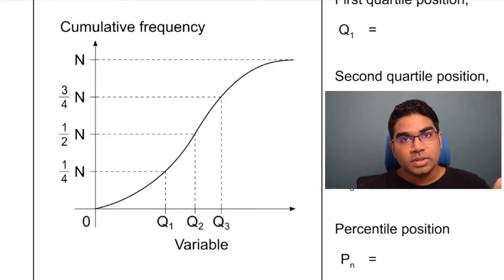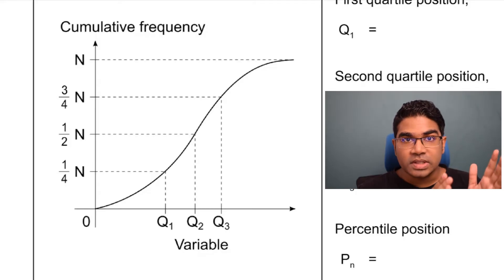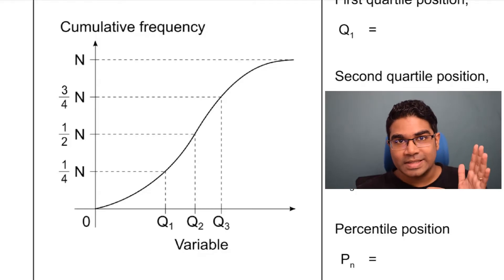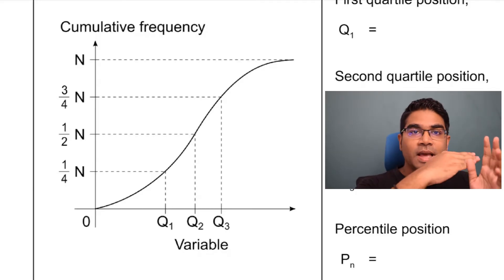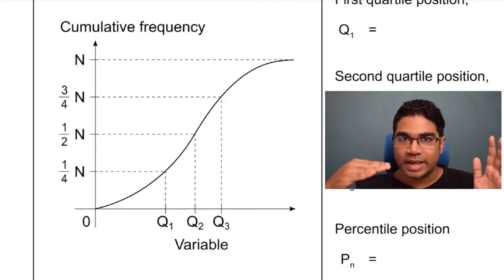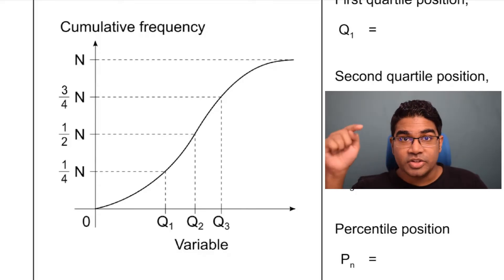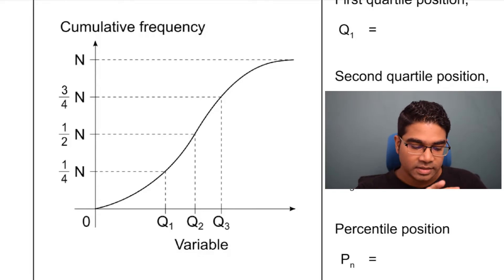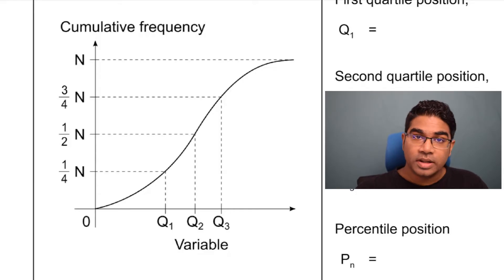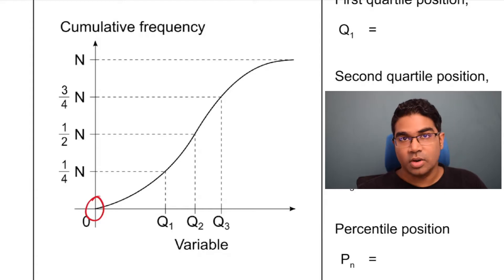First, let's look at what an ogive is. An ogive is simply a graph of cumulative frequency on the vertical axis against the upper boundaries on the horizontal axis. An ogive has an S shape, as you can see in this diagram. It does not necessarily have to start from the origin — in fact, most often it does not.